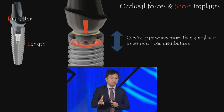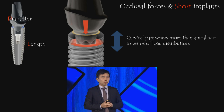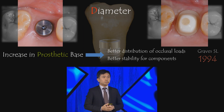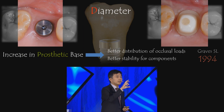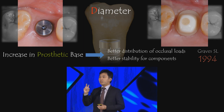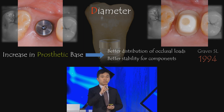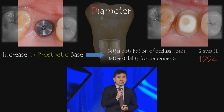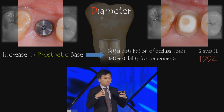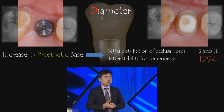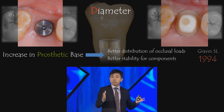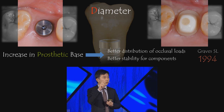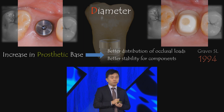Occlusal forces and short implants — the cervical part plays a more critical role in terms of load distribution. Once we ascertain the bone areas, the surgeon may decide on short implants or sinus grafting. We can accept short implants for the posterior area, but at the same time we want to increase the prosthetic base, because it allows better distribution of occlusal forces and thereby better stability to our screws and abutments.